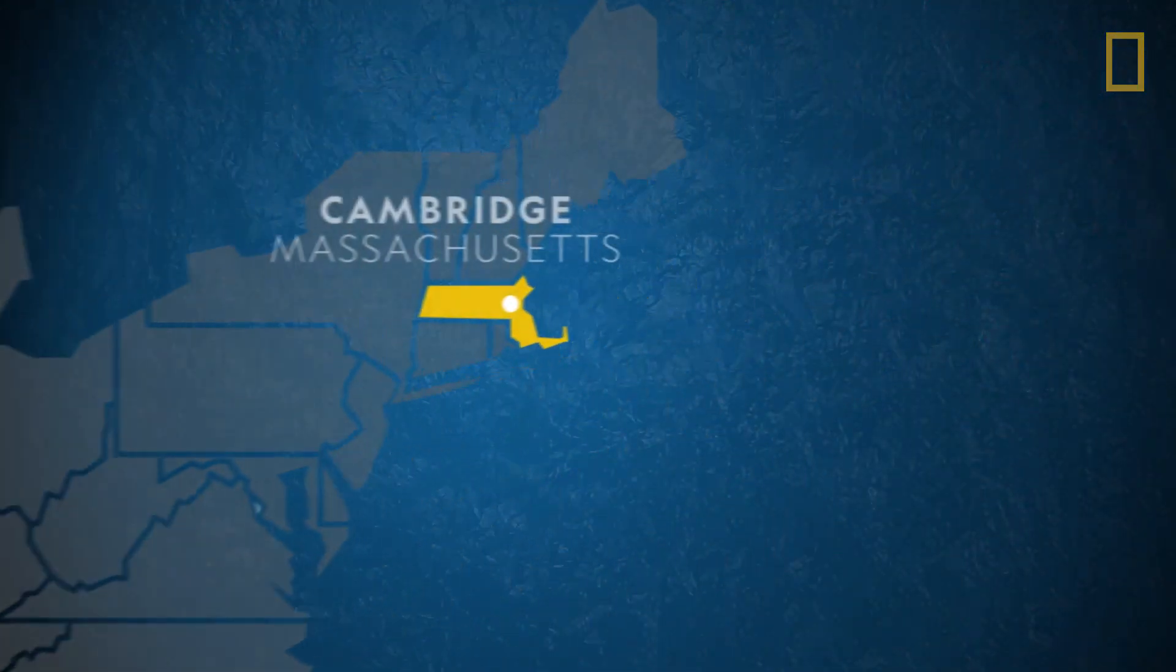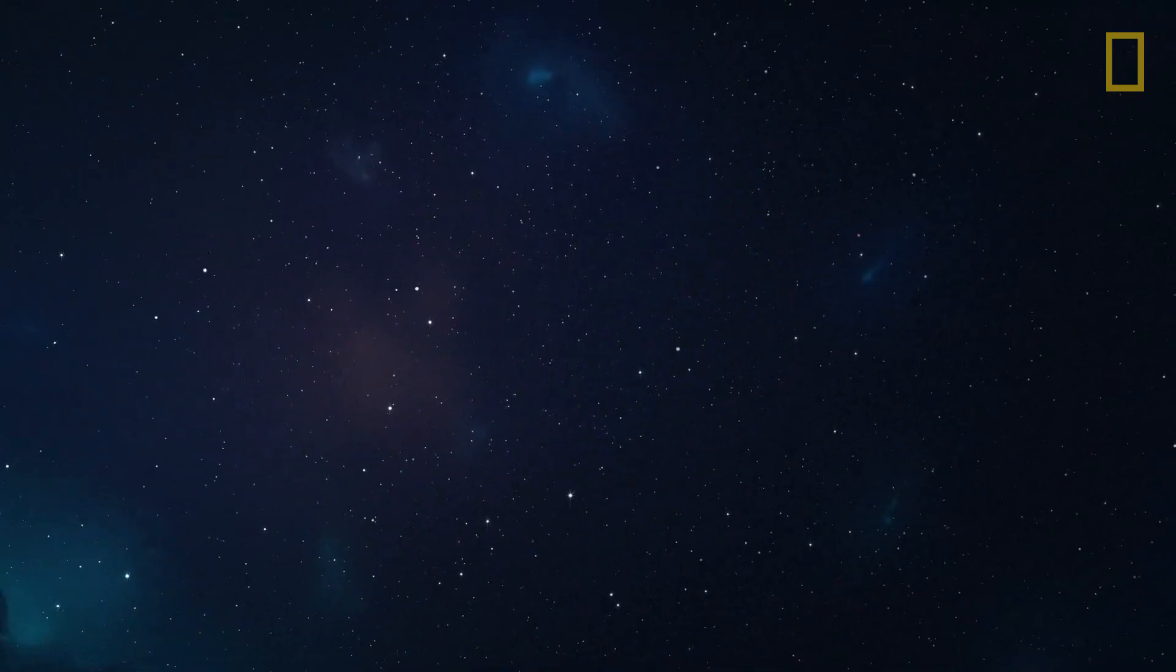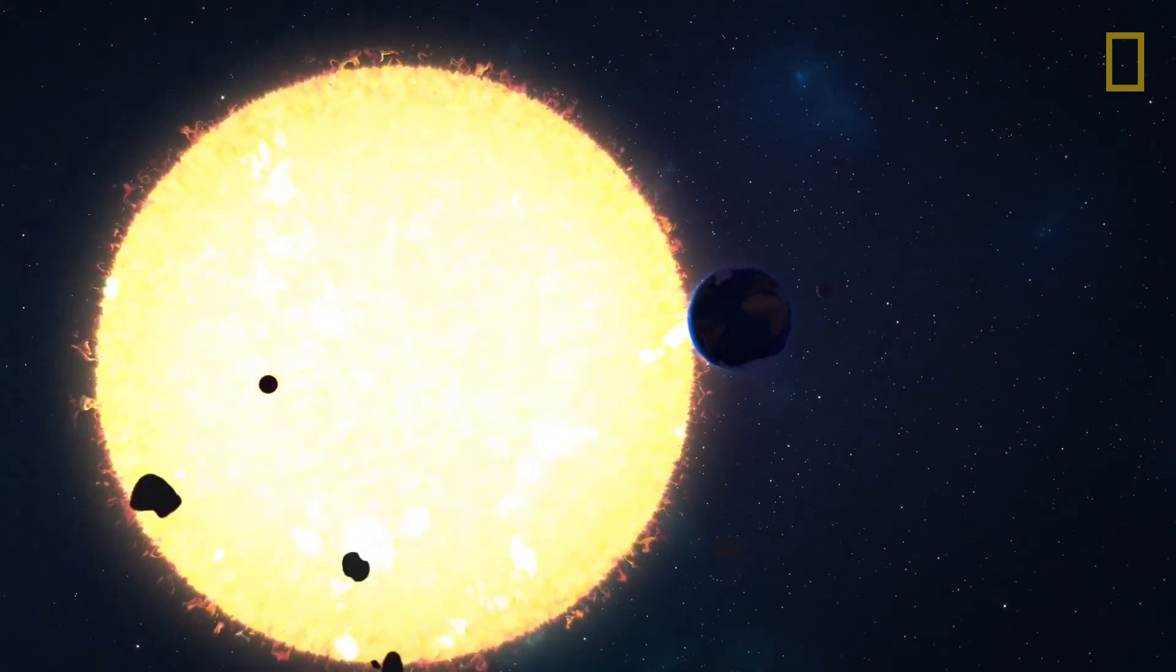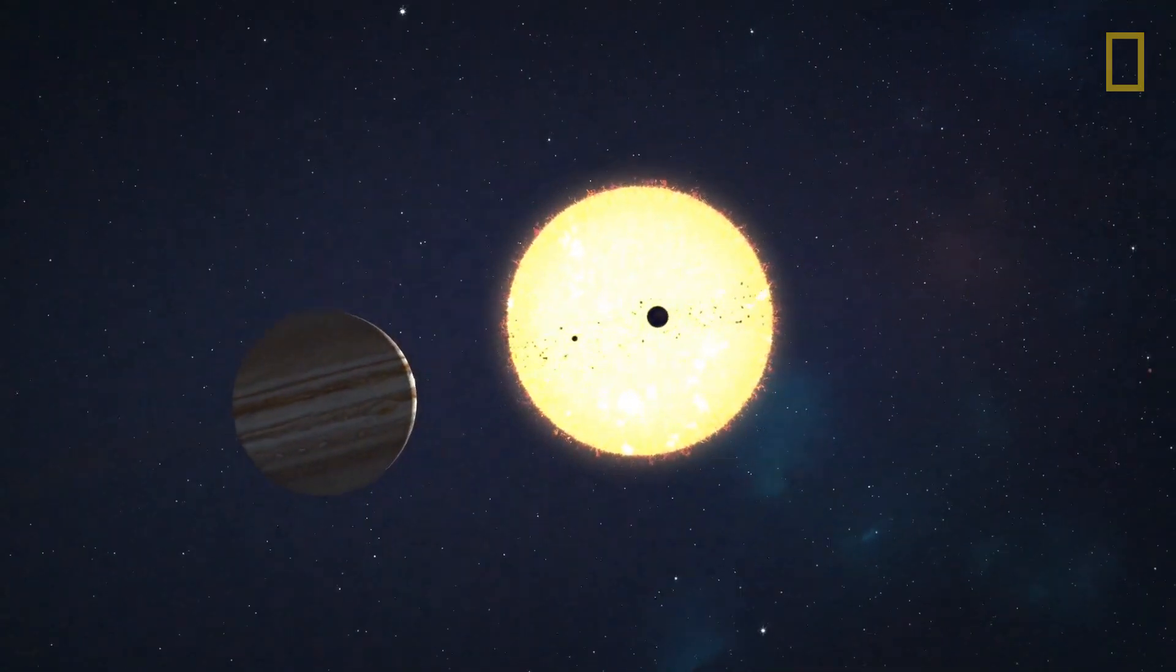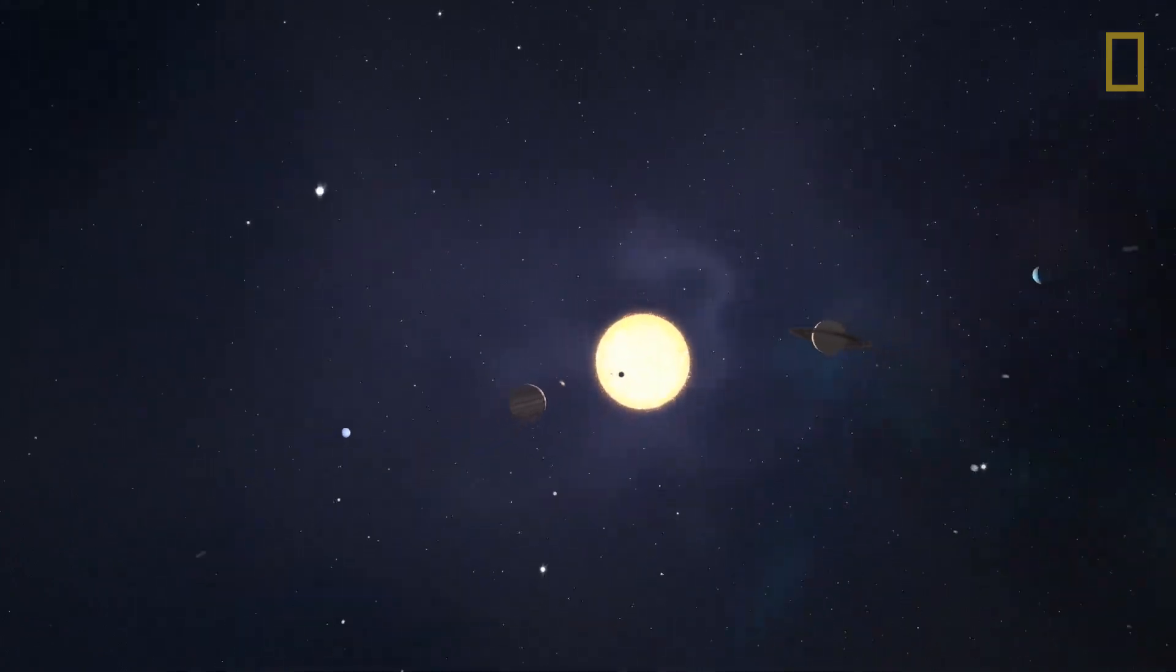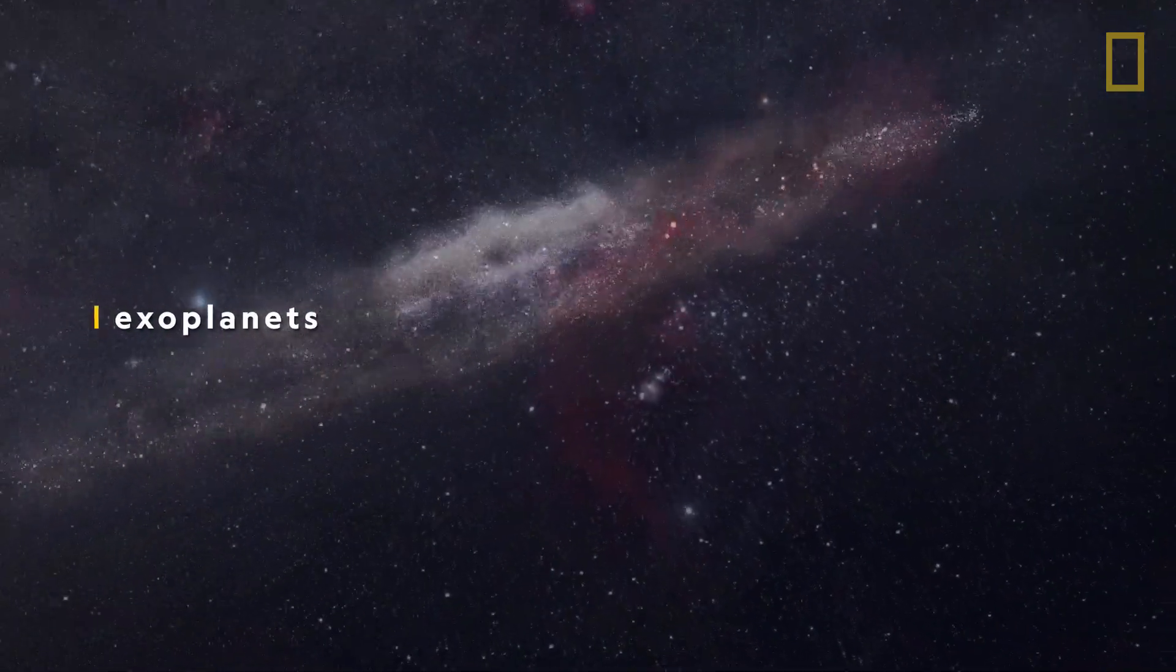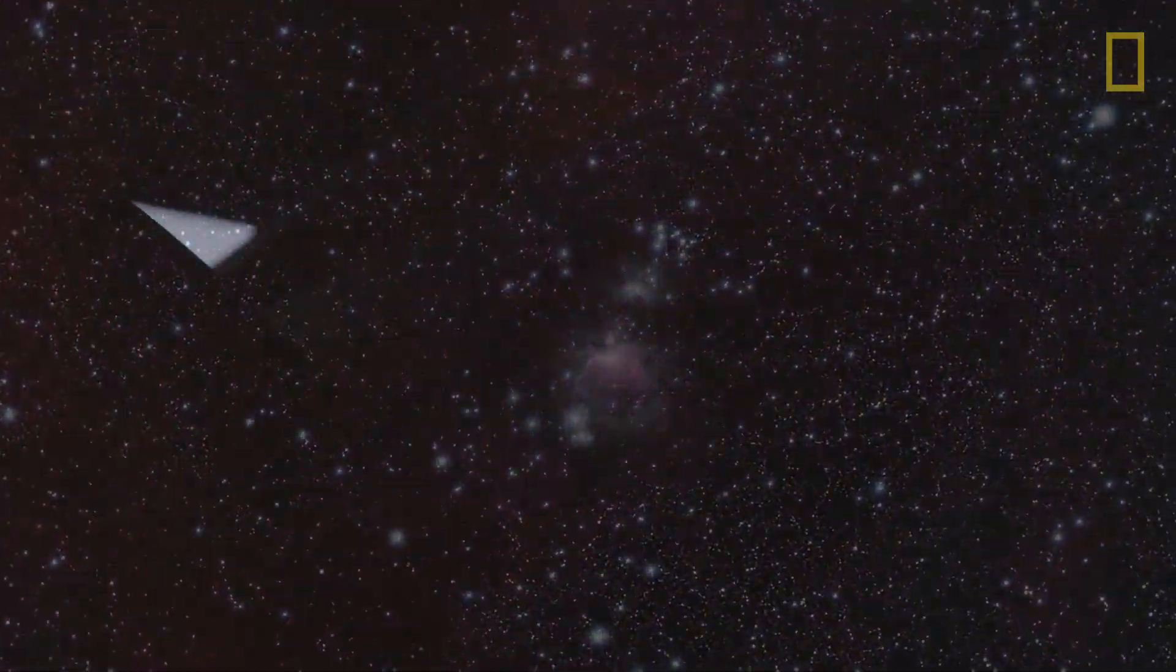Astrophysicist Munaza Alam is in Cambridge, Massachusetts, searching the stars for distant planets. Our solar system consists of a star, known as the Sun, and eight planets. These planets are held in orbit around the Sun by its gravitational pull. Planets found outside of our solar system are known as exoplanets, and these are what Munaza is searching for.